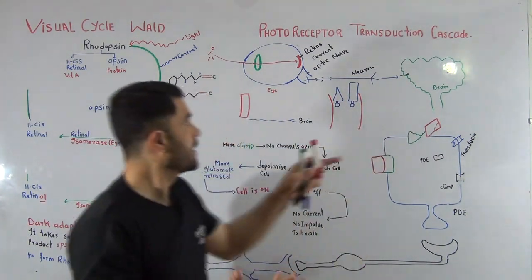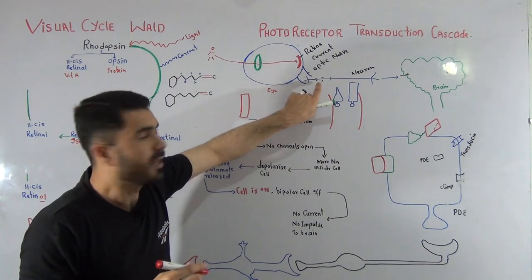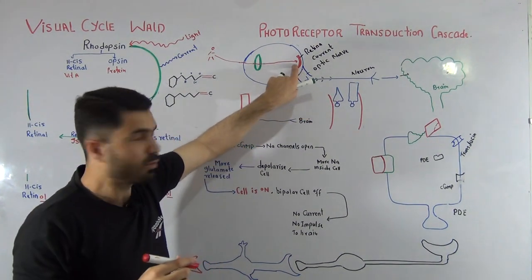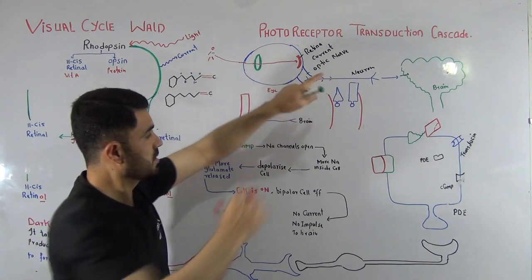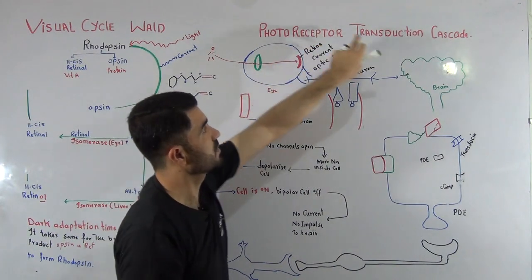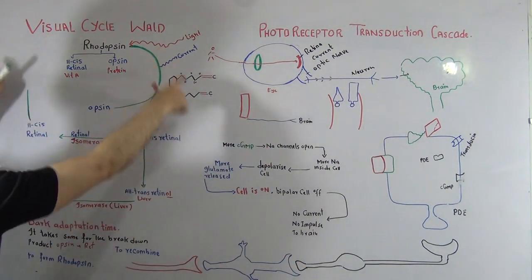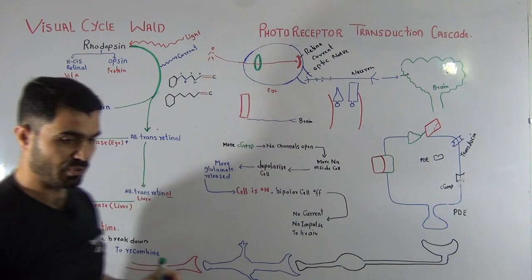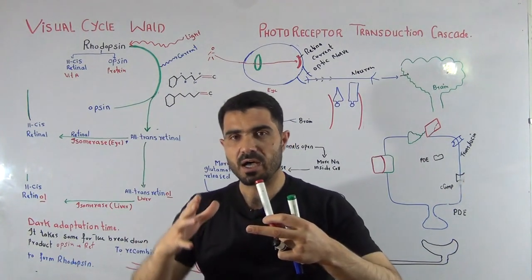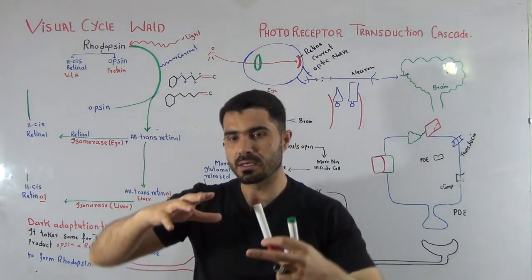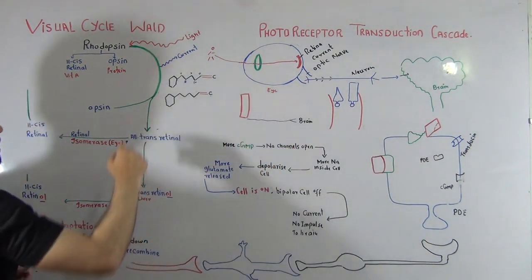In the later video I will explain how this current is produced from the retina into the optic nerve — this is called the photoreceptor transduction cascade. But in the upcoming video lecture, we will first discuss the visual cycle, also called Wald's visual cycle, and how vitamin A is involved in the structural changes responsible for image formation.